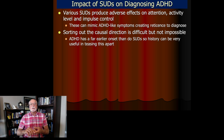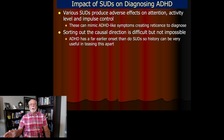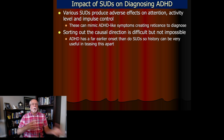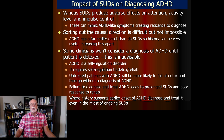ADHD starts far earlier in the life course of an individual than do the substance use problems, which often are not seen until adolescence or at the very latest, late childhood. Typically, ADHD has an onset much earlier than that, during the elementary school years. Therefore, just by taking a careful history, a clinician should be able to tease apart which one of these was the first disorder and which one occurred second, and possibly secondarily, to that ADHD.